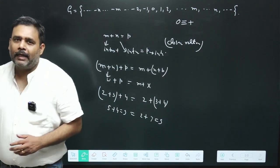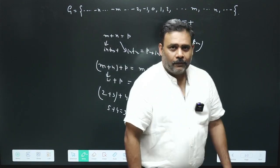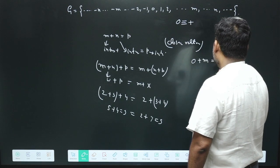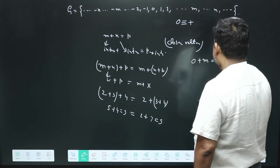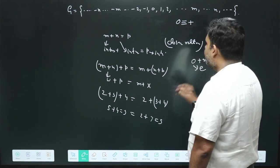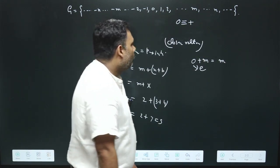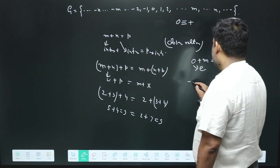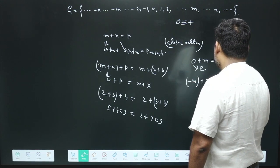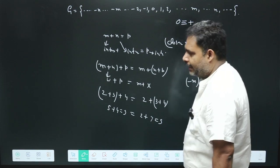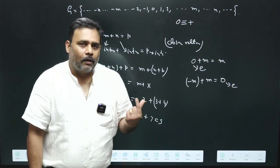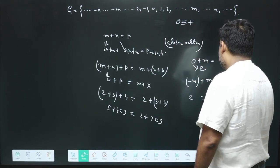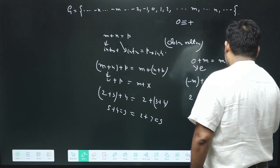The identity element is 0, since 0 plus any integer — positive or negative — returns that same integer. For the inverse: the negative of any integer serves as its inverse, since m + (-m) = 0, which is the identity. For example, the inverse of 2 is -2.